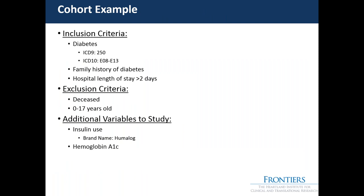We're about to get into Heron. Here is the cohort example I'll lead you through. When researchers have a question, they typically have inclusion criteria, exclusion criteria, and additional variables of interest. For this case, we'll look at diabetes by both ICD-9 and ICD-10 codes, patients who have a family history of diabetes and a hospital length of stay greater than two days. We'll exclude anyone who has passed away or is zero to 17 years old. Additional variables include insulin use and hemoglobin A1c.